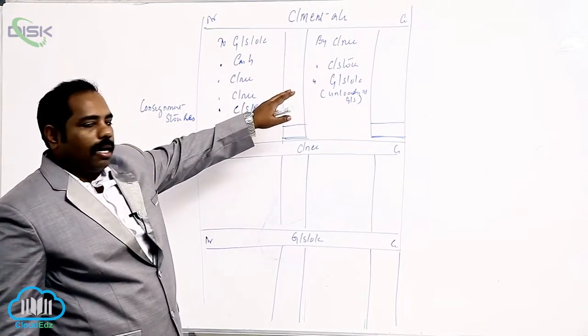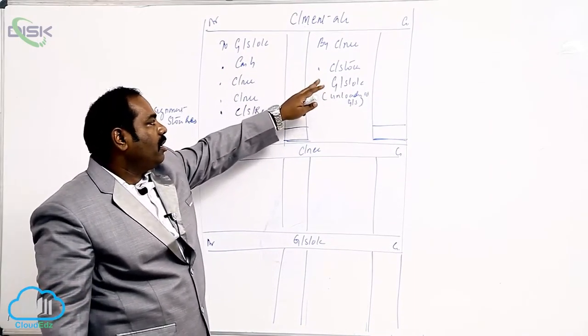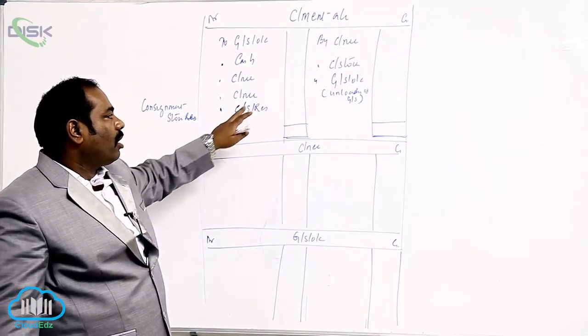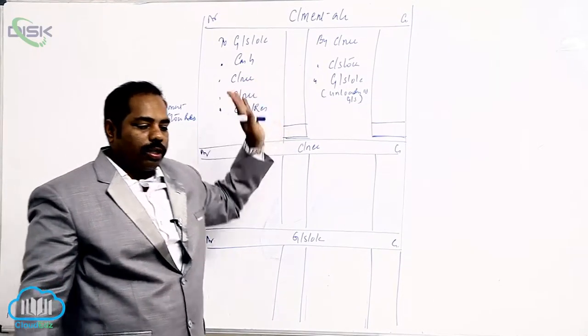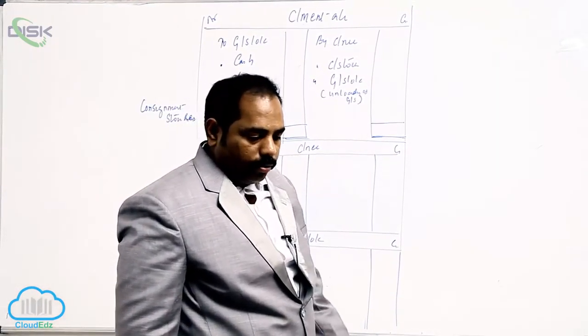So two additional entries have come. One is for unloading of the goods sent, and the other one is for unloading of the unsold stock. Now let me teach you Problem 11.